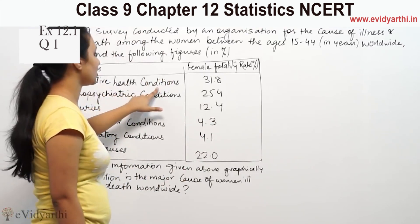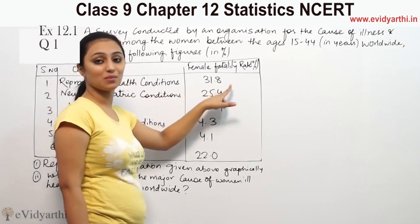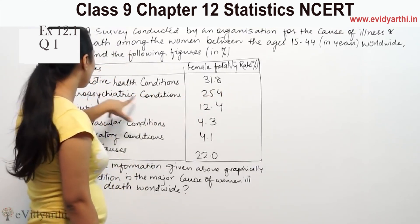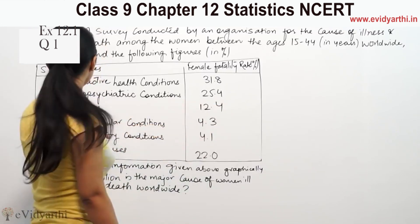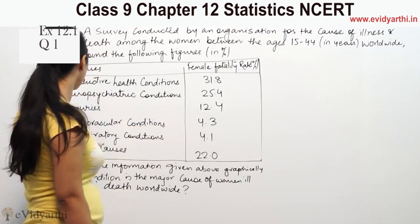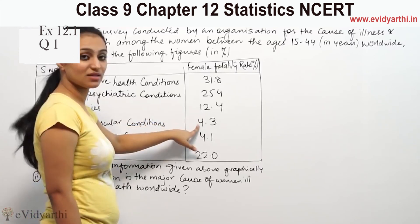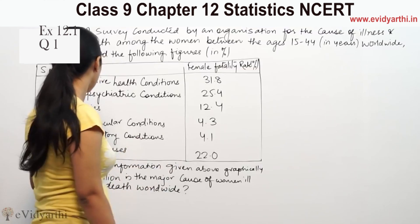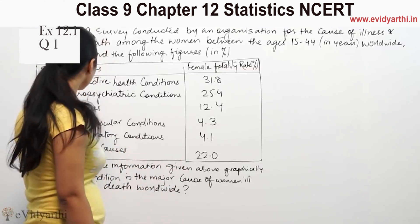Reproductive health conditions is 31.8%. Neuropsychiatric conditions is 25.4%. Injuries is 12.4%. Cardiovascular conditions is 3.3%. Respiratory conditions are 4.5%, and other causes is 22%.